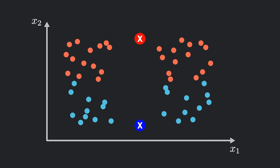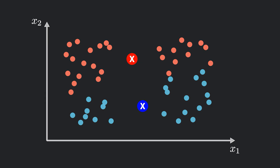Once all points are assigned, the centroids are then moved to the average position of the points in their cluster. This process of assignment and updating continues, iteration after iteration, until the centroids no longer move significantly. At that point, the algorithm stops and we are left with the final clusters.